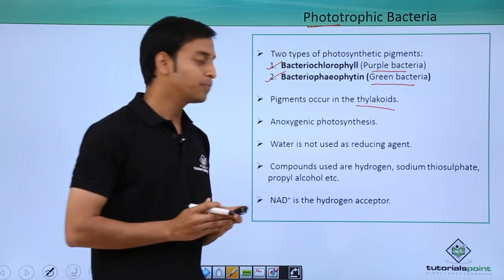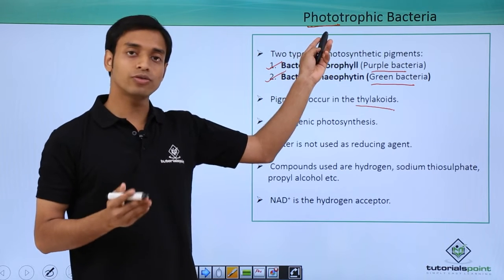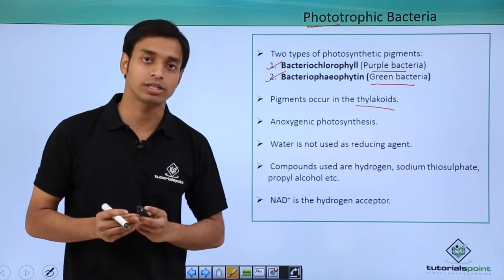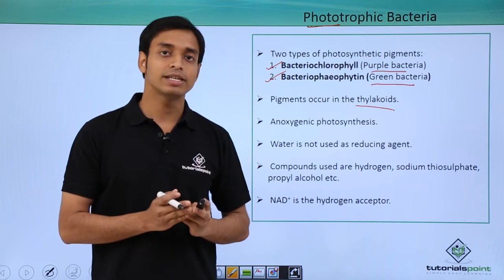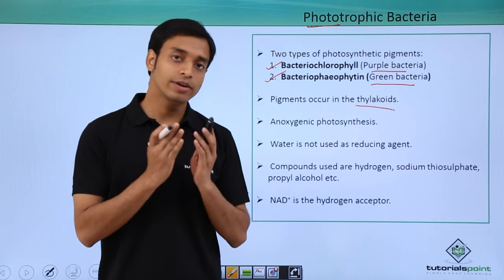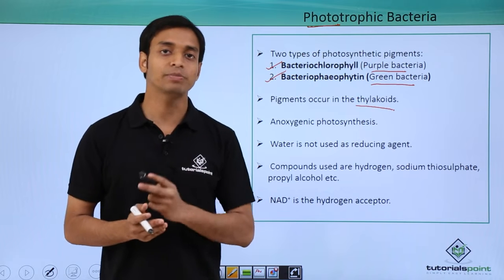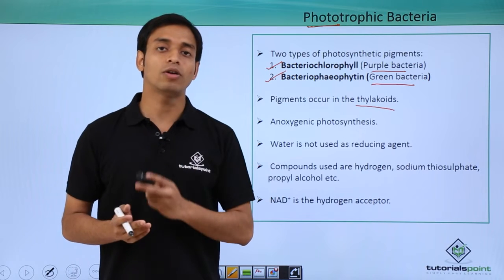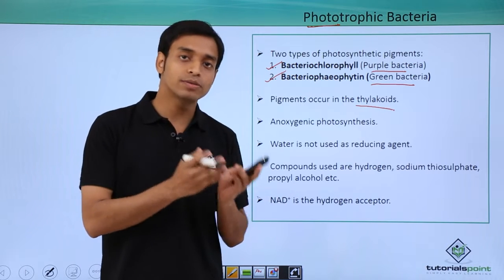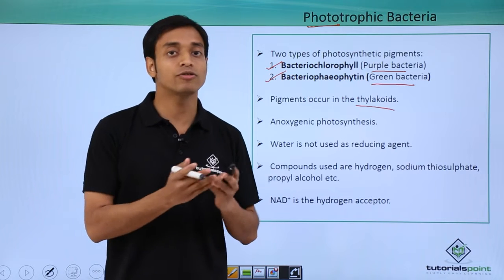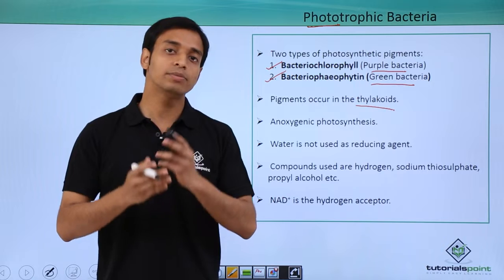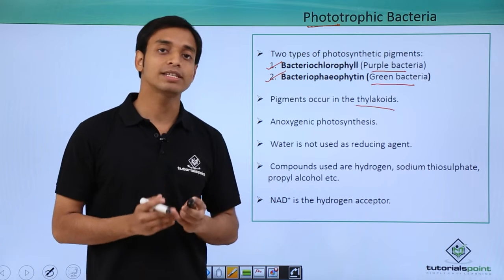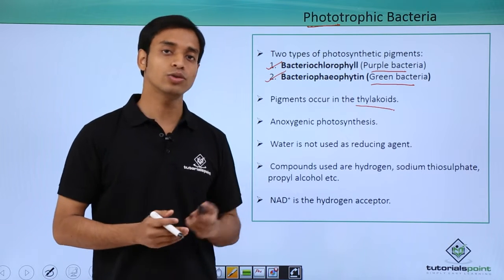The process of phototrophism in these bacteria is an anoxygenic photosynthesis. This means that due to the process of photosynthesis, evolution of oxygen does not take place. In most plants, oxygen is a by-product of photosynthesis, but in case of these bacteria it is anoxic — oxygen is actually not evolved as a result of photosynthesis.